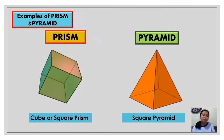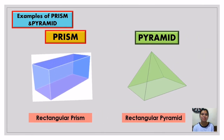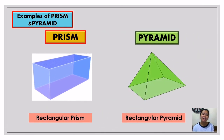Here are examples of prisms and pyramids. This is a cube or square prism — it has no apex and has two bases. This is a square pyramid — its base is square and it has an apex, so it is called a square pyramid. Next, the rectangular prism has rectangular bases, and the rectangular pyramid is named so because its base is rectangular in shape and it has an apex.